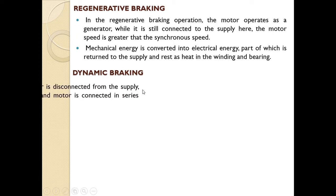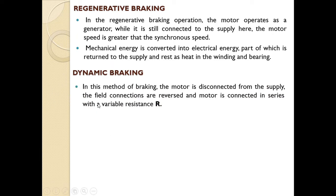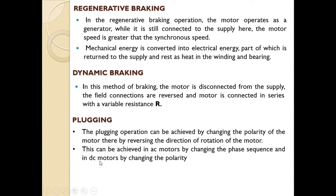In dynamic braking, the motor is disconnected from the supply, the field connections are reversed, and the motor is connected in series with a variable resistance R. In plugging, the operation can be achieved by changing the polarity of the motor, thereby reversing the direction of rotation. This can be achieved in AC motors by changing the phase sequence and in DC motors by changing the polarity.